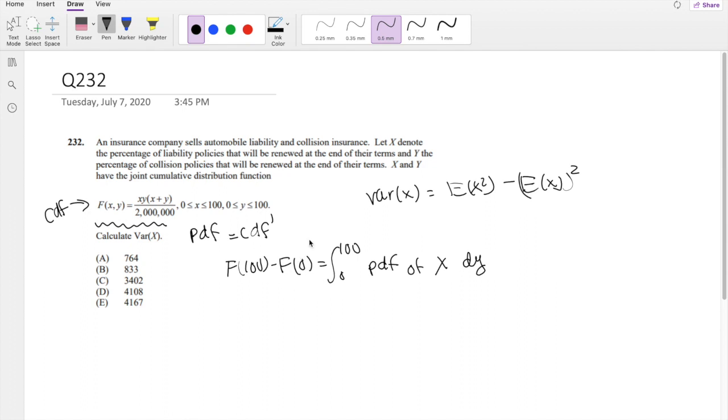But we know that f of 0, when you plug in 0 here, is just 0. So we know that this would just be F(100) equals this pdf. All right, so then we can actually do that real quick.